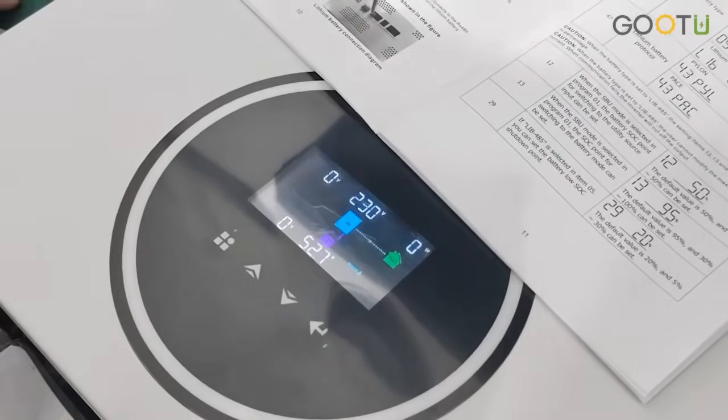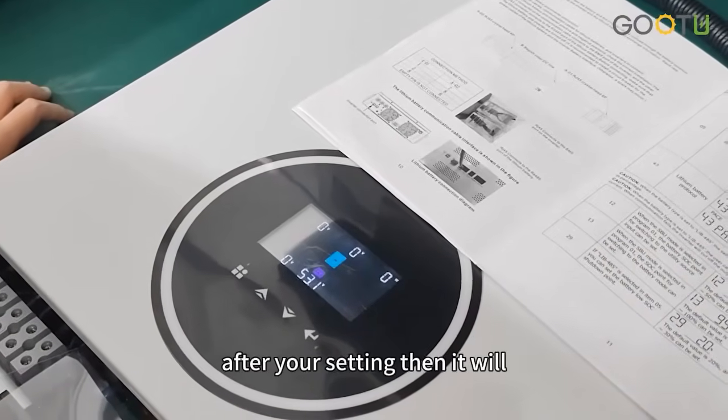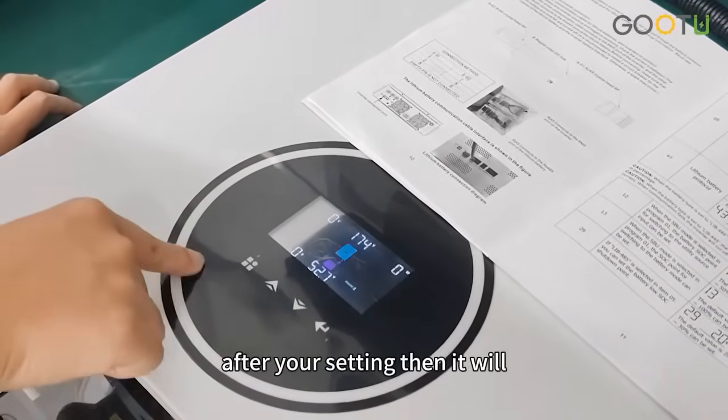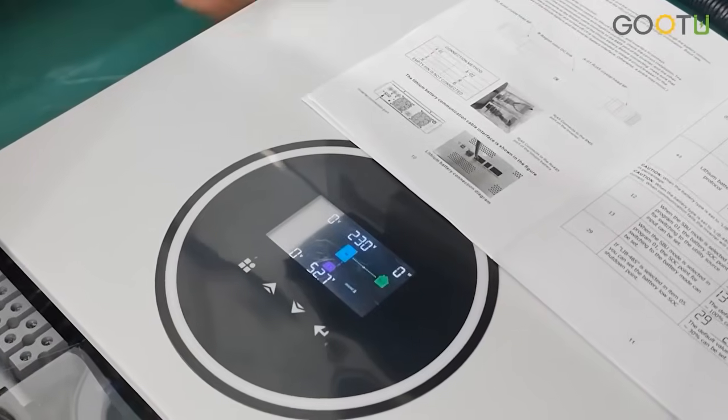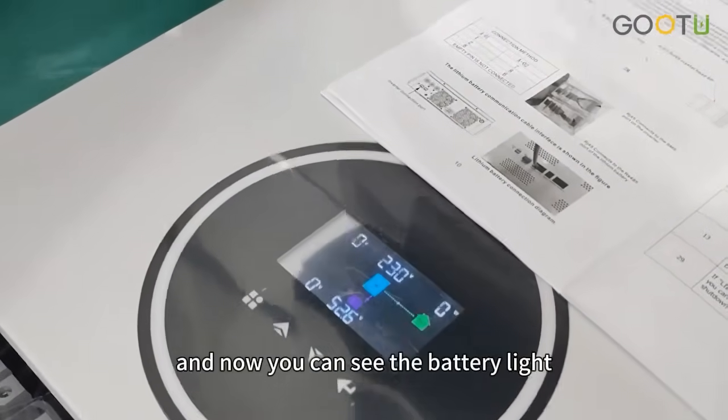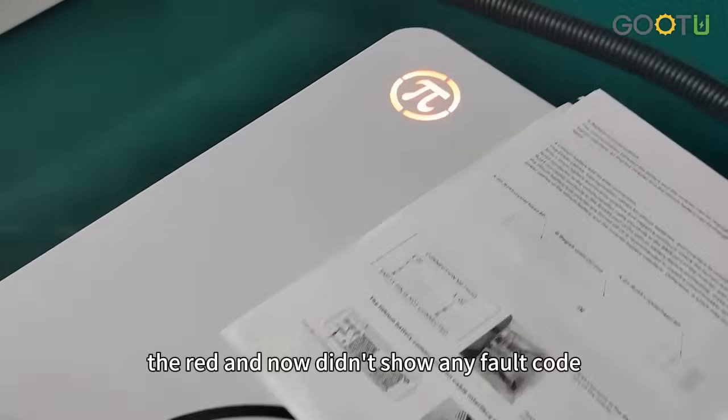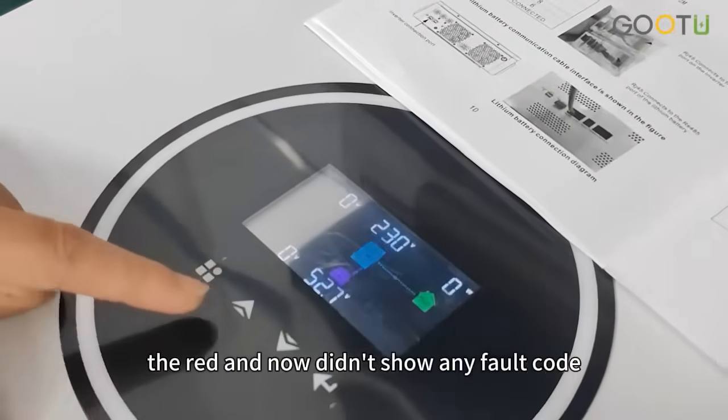Come back to home page. You can wait. After your setting, then it will restart for communication. And now you can see the battery light, the red light. And now it didn't show any fault code.